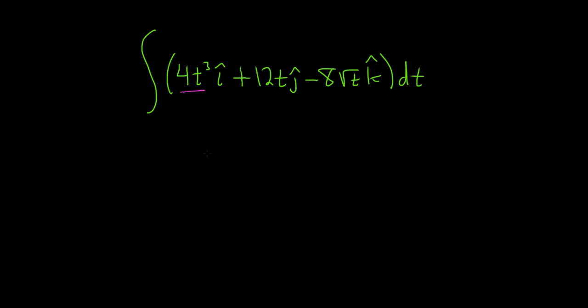So we'll integrate 4t cubed, which is pretty easy. And we'll integrate 12t. And then we have to integrate this. So before we integrate this, we should maybe think of it as negative 8t to the 1/2, because when we integrate, we'll want to use the power rule.